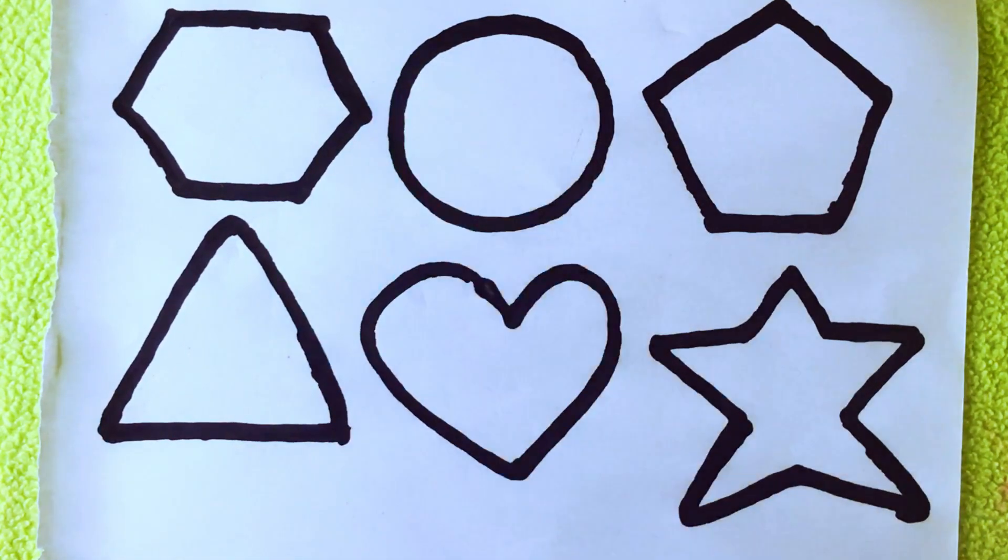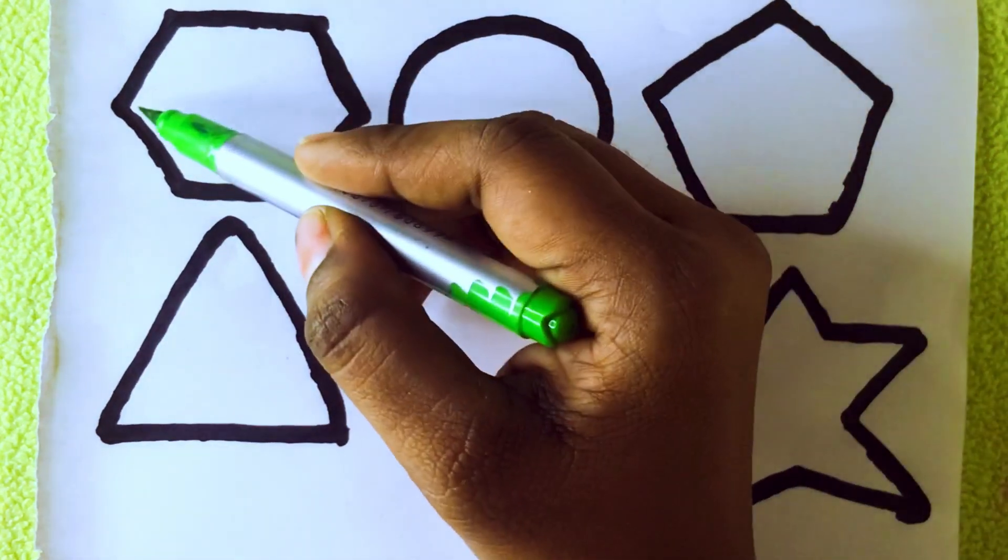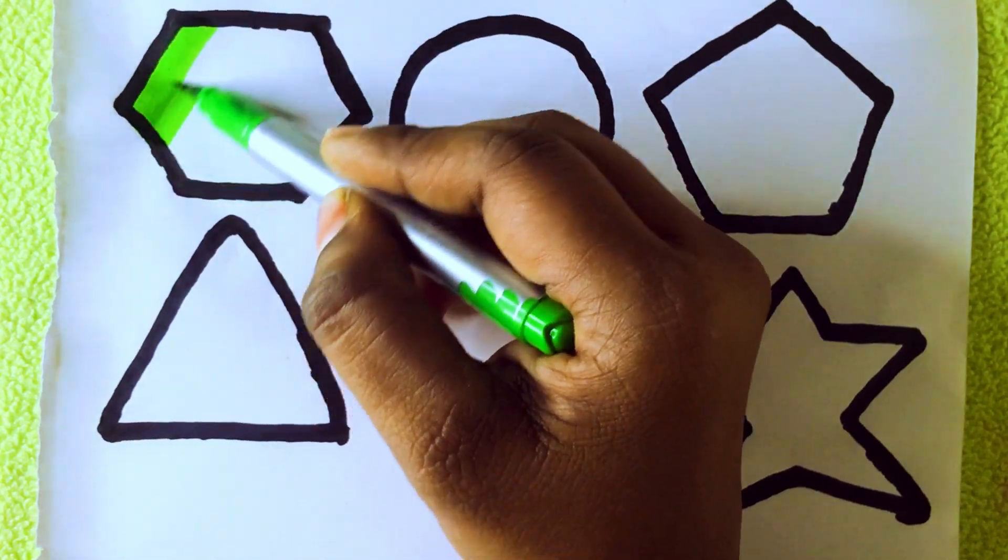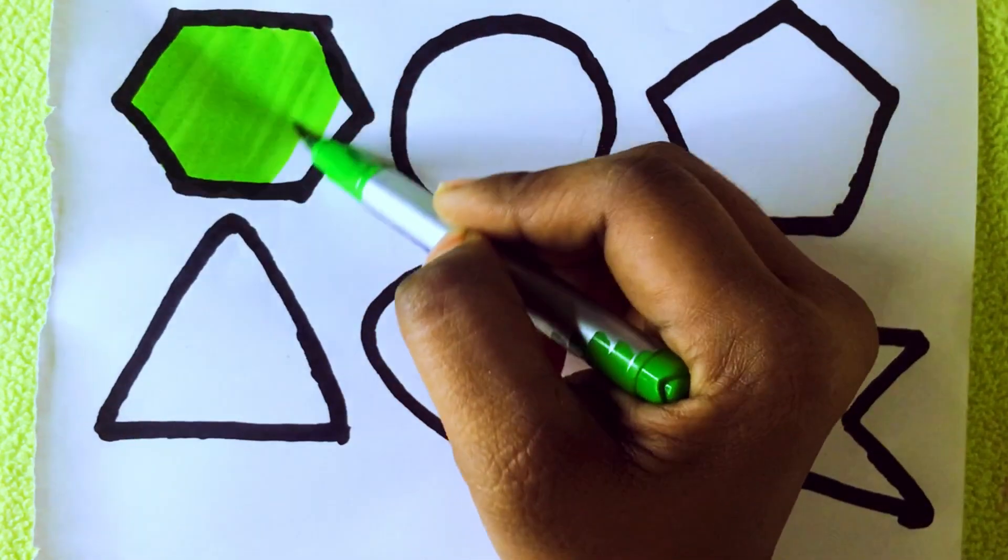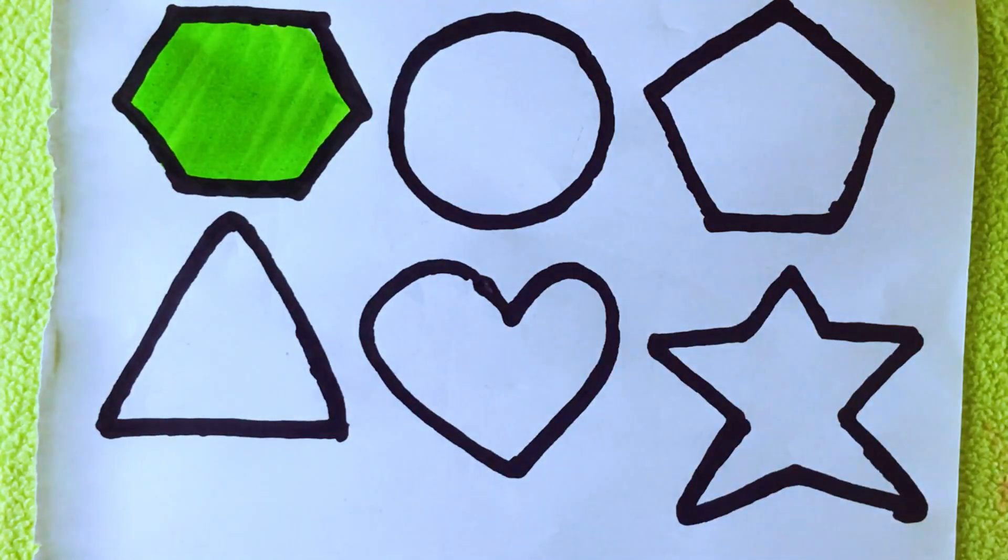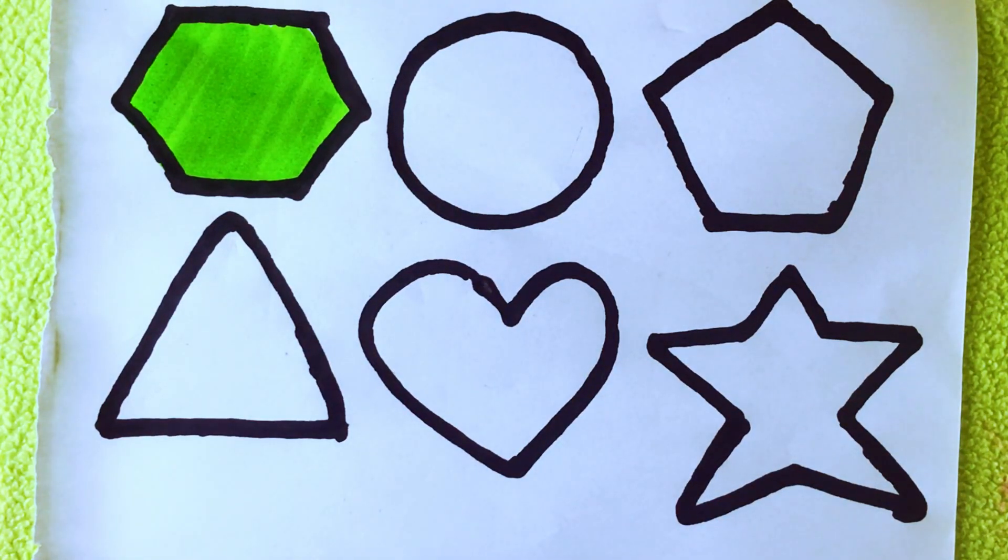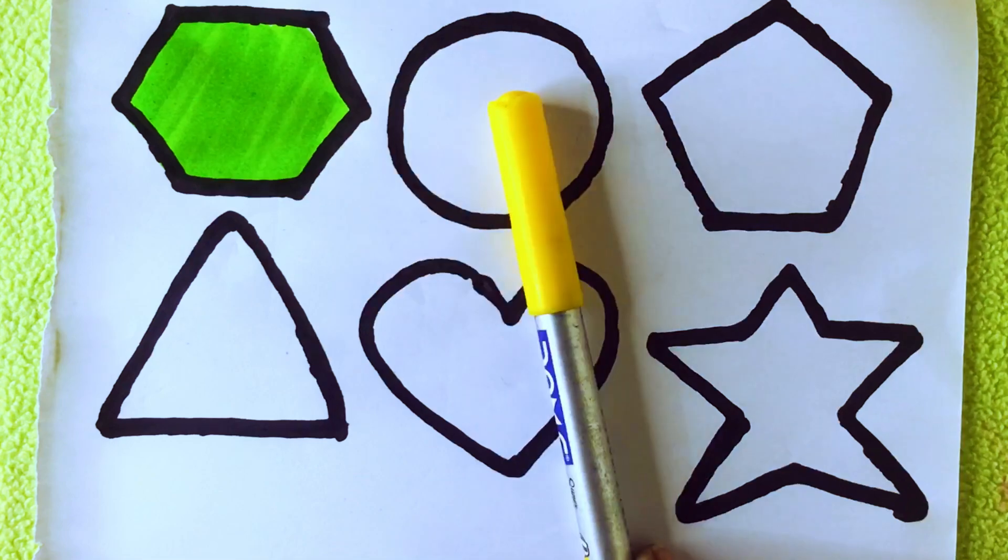Green color. Let's draw hexagon. Hexagon. Yellow color. Let's draw circle.